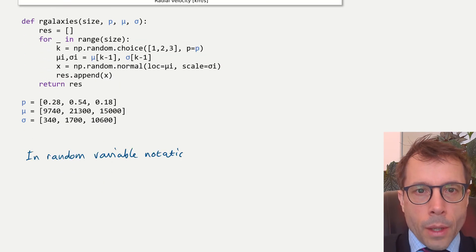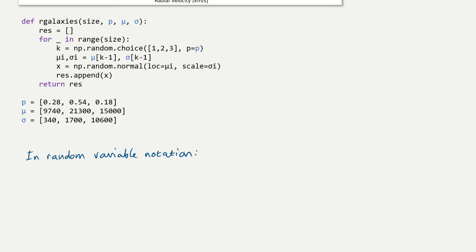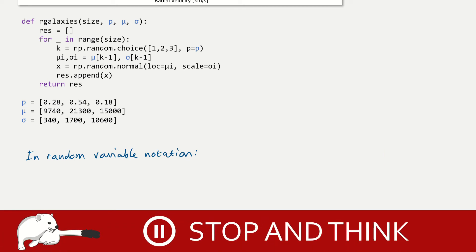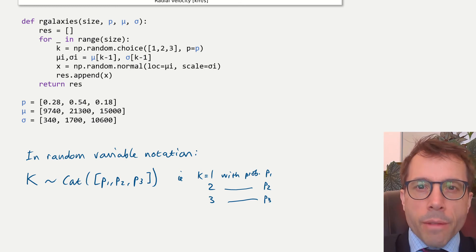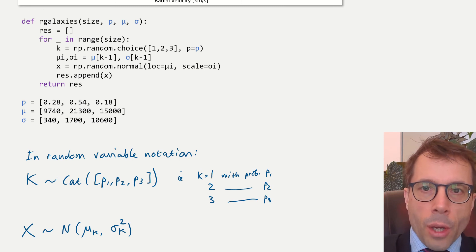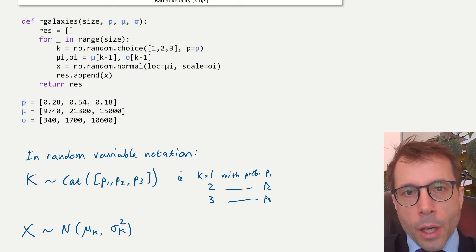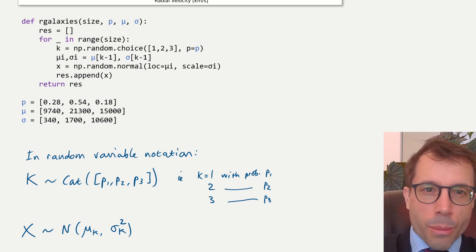How would you write out this model in random variable notation? Pause the video, stop and think, and press play when you're ready. This is really just about vocabulary. There are some standard random variables that everyone in machine learning uses all the time. Here I'm using the categorical random variable, which is a name for a random selection from a list. It just means return 1 with probability p1, 2 with probability p2, 3 with probability p3. And next, we sample a value from a normal distribution with parameters mu1 and sigma1 if k is 1, mu2 and sigma2 if k is 2, and so on. In math notation, indexing starts at 1, but in Python it starts at 0, which is a bit of a pain.